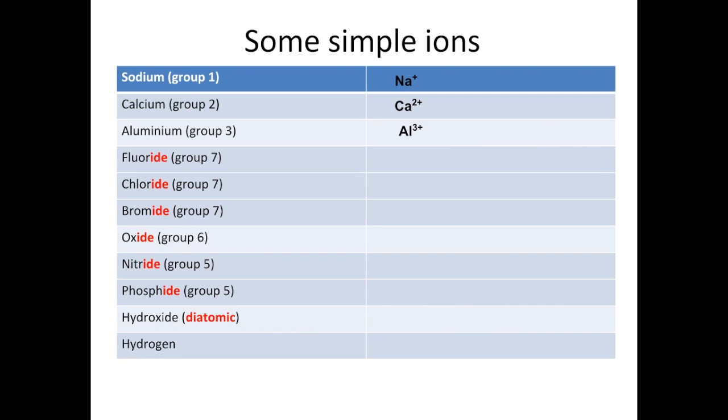And then if we move over to group 7, so they've got 7 electrons in their outermost shell. They want to gain an electron. So the fluoride ion is F-, chloride Cl-, bromide Br-.